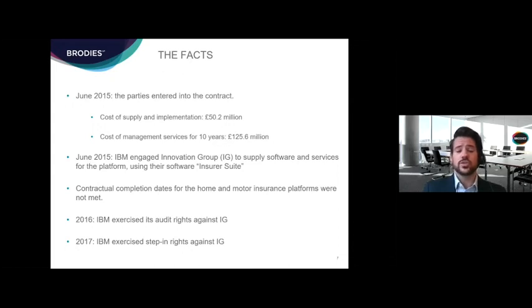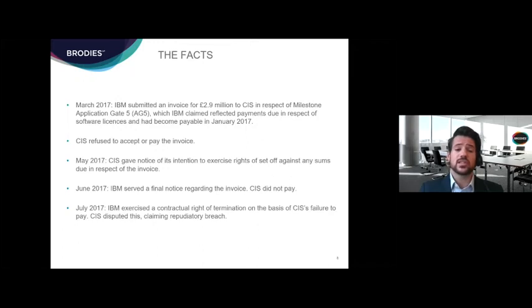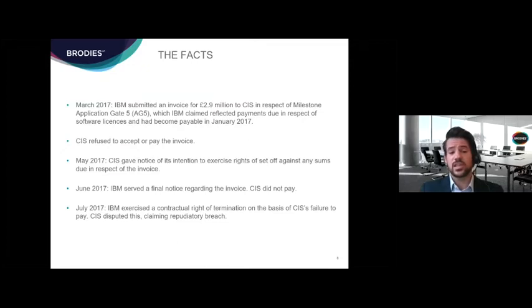Contractual completion dates for the home and motor insurance platforms were not met, and IBM, recognizing issues with their subcontractor, exercised audit rights and then step-in rights against IG. Around the same time, in March 2017, IBM submitted an invoice for approximately £2.9 million to CIS in respect of milestone AG5, which IBM claimed reflected payments due for software licenses that had become payable in January 2017. CIS refused to accept or pay the invoice and in May gave notice of its intention to exercise rights of set-off. In June IBM served a final notice, CIS still didn't pay, and in July IBM exercised its contractual right of termination on the basis of CIS's failure to pay.